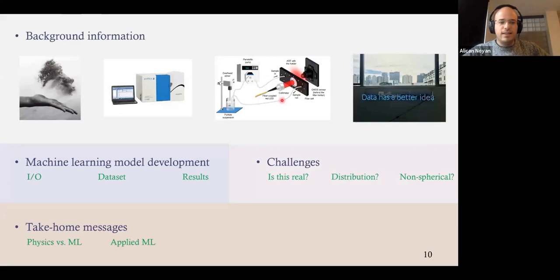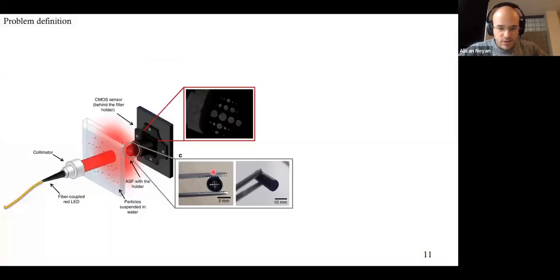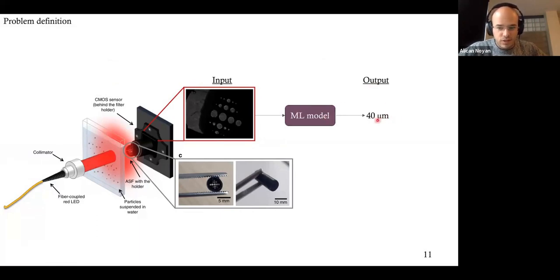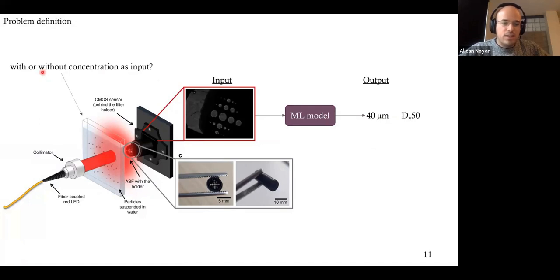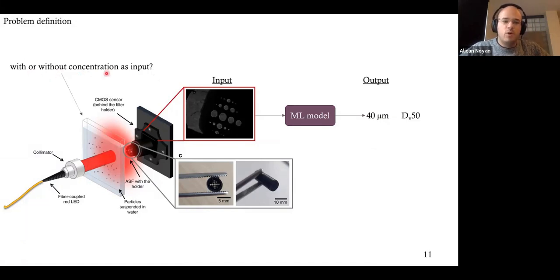Now I can explain the machine learning model development. We have this image, and we'll input it to a machine learning model to output a particle size prediction — specifically d50 based on volume. An important question was whether to use concentration as input. If we use it, the model will perform much better, but from a practical standpoint it should work without concentration because we don't always know it. So we said let's do both and compare.